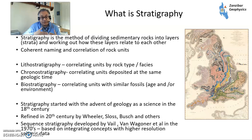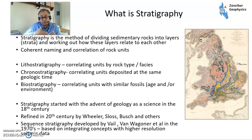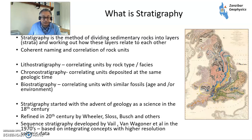We've got different types of stratigraphy. We've got lithostratigraphy, correlating different rock units of similar rock type, similar facies, similar deposition environments. Chronostratigraphy, correlating units deposited at the same geological time — William Smith was the first person to work that out. So here's the Jurassic, here's the Cretaceous, here's the Carboniferous, etc.